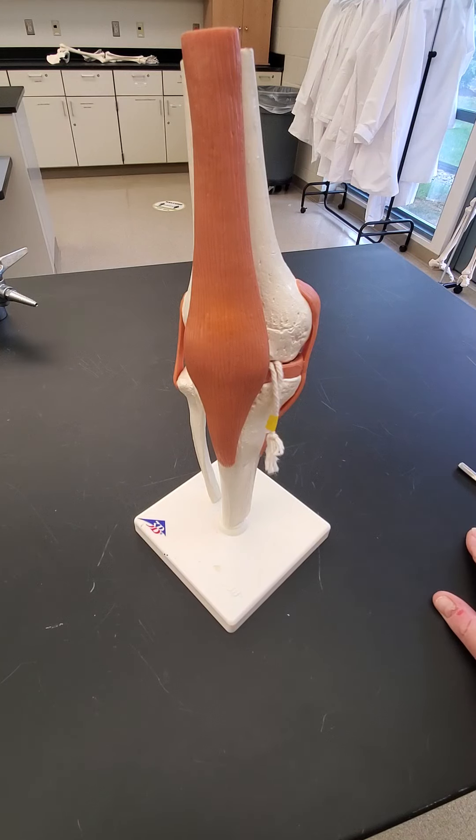It's got ligaments, tendons, meniscuses, fat pads, and bursa. So you'll see a lot of those on this model. You won't necessarily see all of them, but you'll see a lot of them. And so you have to be sure that you study this.